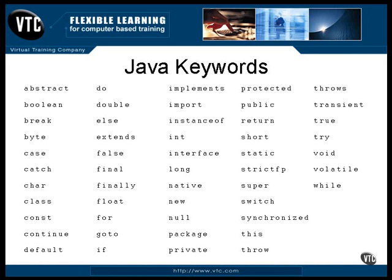The Java language has 51 keywords that are strictly reserved. That is, you can't use any of these to name anything. Most of them you're familiar with because you've seen them in action at one time or another in this course, but you need to be able to recognize all of them.